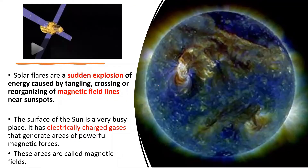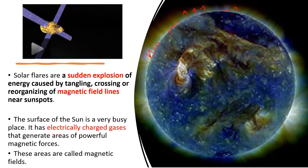Solar flares are a sudden explosion around the surface of the sun. When this sudden explosion occurs, a very huge amount of energy is generated by the reorganizing or reconfiguring of magnetic fields. The surface of the sun is very active due to the presence of magnetic fields, electric fields, and electrically charged gases.